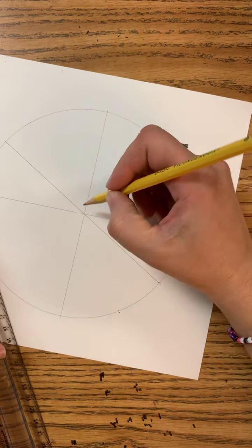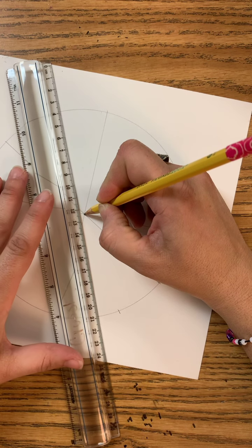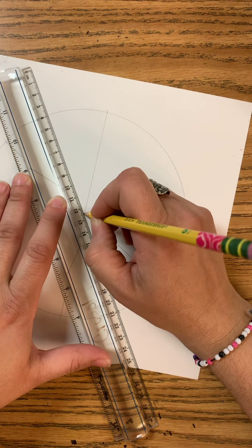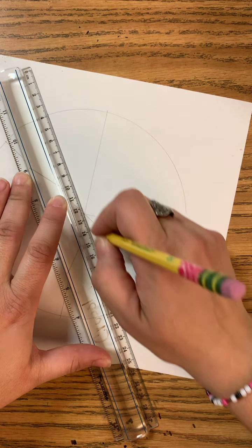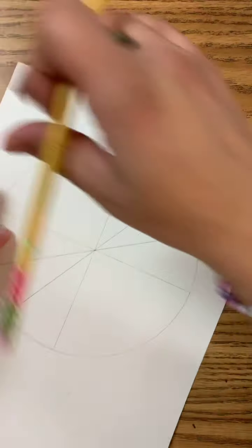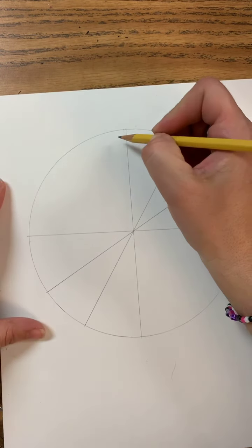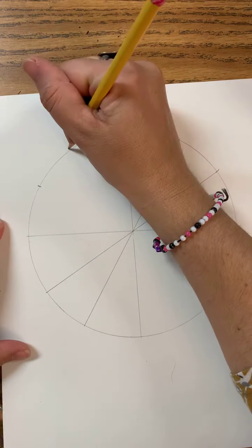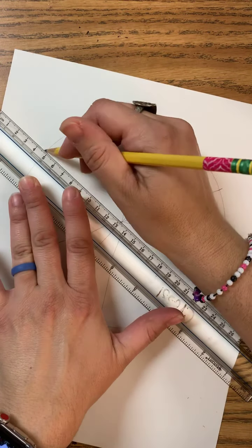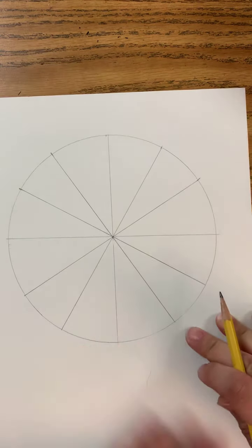Then I'm going to repeat that one more time. So I'm going to take my pencil, I'm going to put it in the center, I'm going to line up my ruler with my center, and I'm going to slide it over to where it hits this little mark again. And I'm going to draw all the way across. So this created six sections, one, two, three, four, five, six, and I'm going to do the same thing over here.